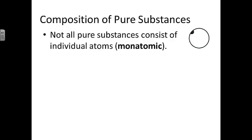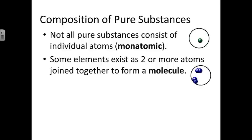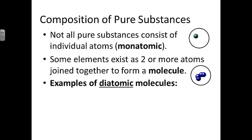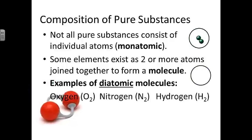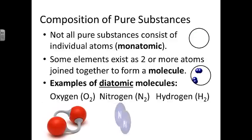Not all pure substances consist of individual atoms. That would be monatomic if they consist of individual atoms. Some elements exist as two or more atoms joined together to form a molecule. Diatomic molecules have two atoms joined to form the molecule. Examples include oxygen, nitrogen, and hydrogen.